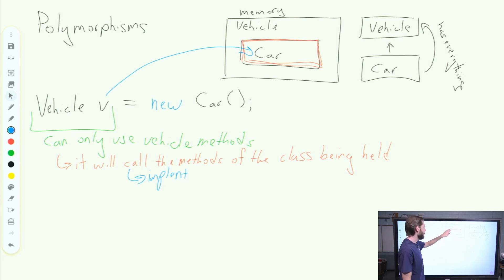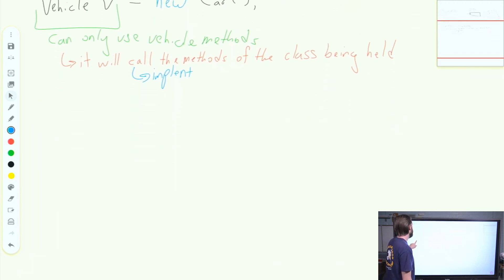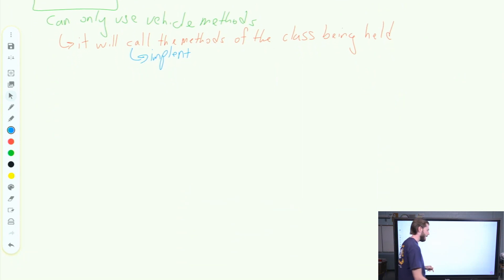So I can hold vehicles, I can hold cars, I can hold sports cars and trucks and all kinds of different things. This becomes really powerful when we look at collections of classes. So let's look at our friend, the ArrayList.